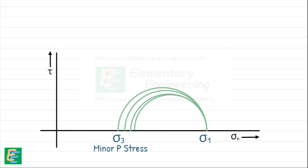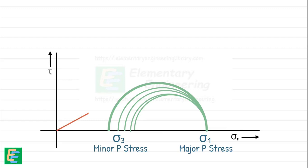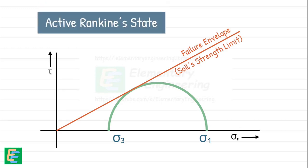While the vertical stress, sigma z, takes over as major principal stress, sigma 1. With this, the Mohr circle keeps growing and when the stress reaches a point where the soil is about to fail, the Mohr circle touches the failure envelope, which is basically the soil's strength limit. At this stage, the soil mass is said to be in the active Rankine state.